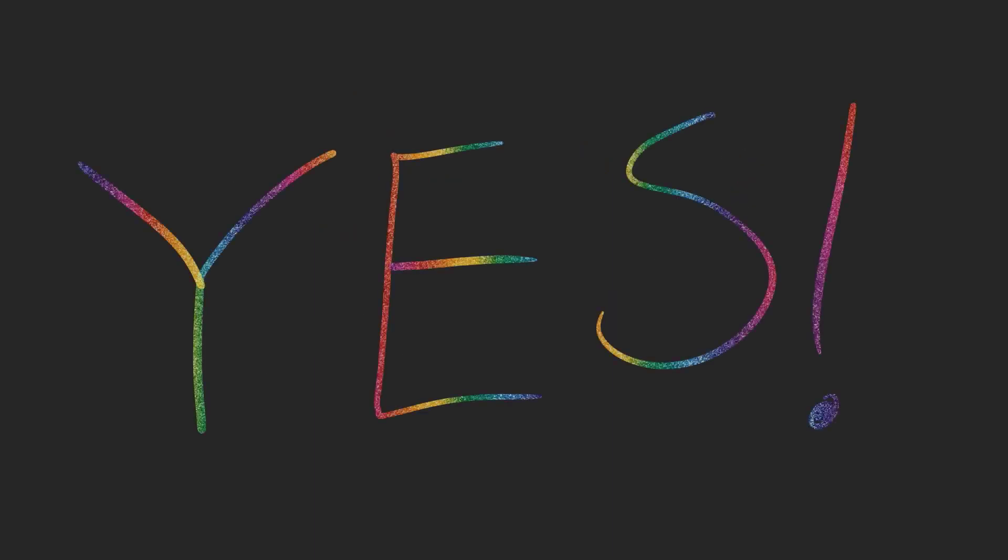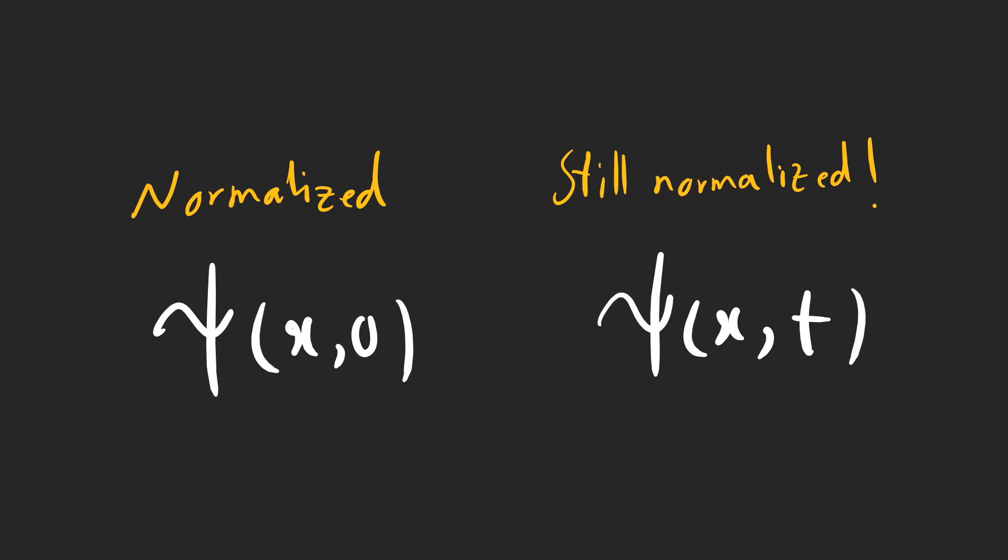Now, you might ask if the wave function remains normalized after some time. The answer is yes. Fortunately, the Schrödinger's equation preserves the normalization of the wave function, and we can make sure that if the wave function is normalized at time 0, it will be normalized at any other point in time.